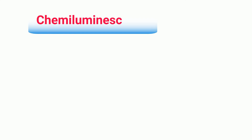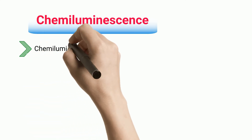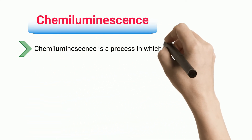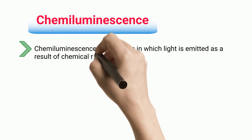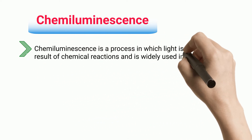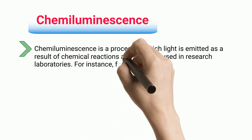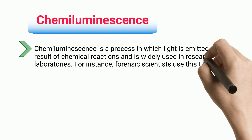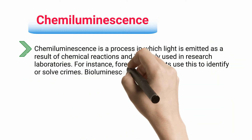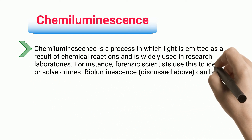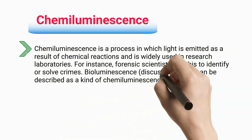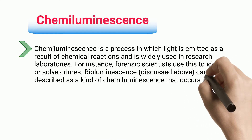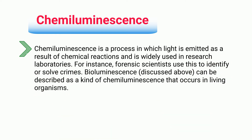Chemiluminescence. Chemiluminescence is a process in which light is emitted as a result of chemical reactions and is widely used in research laboratories. For instance, forensic scientists use this to identify or solve crimes. Bioluminescence, discussed above, can be described as a kind of chemiluminescence that occurs in living organisms.